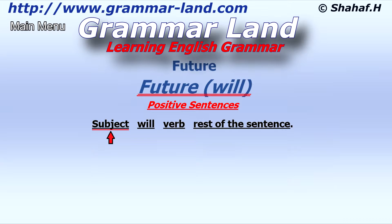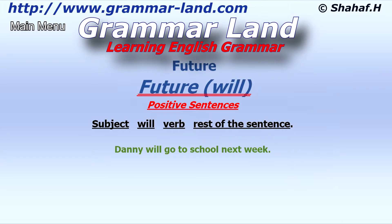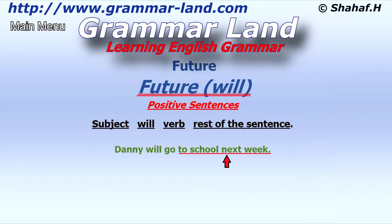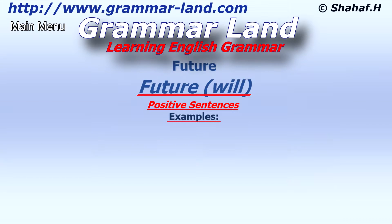Let's start with positive sentences. The sentence starts with the subject, followed by 'will,' then comes a verb, followed by the rest of the sentence. For example: 'Danny will go to school next week.' The subject is Danny, 'will' is the expression which indicates future, and the verb 'go' stays as it is in its basic form. It does not matter what the subject is — we always use 'will' and the verb is always in its basic form.